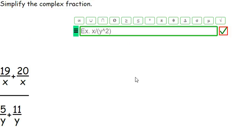So we got 19 over x plus 20 over x, and that's all over 5 over y plus 11 over y. Got it.